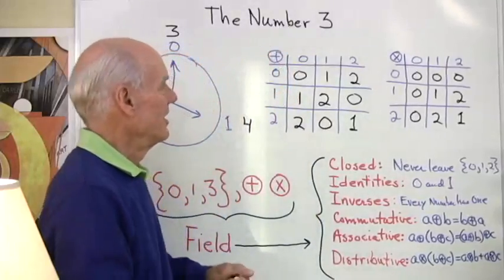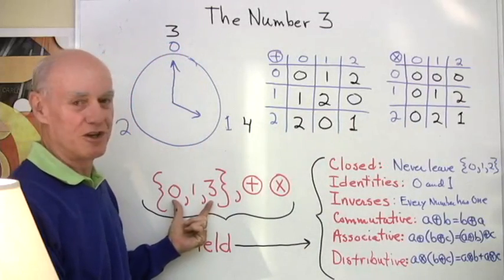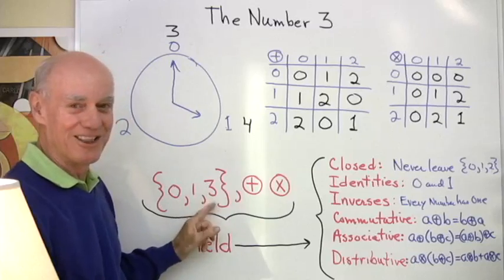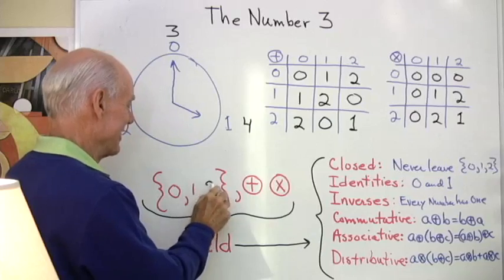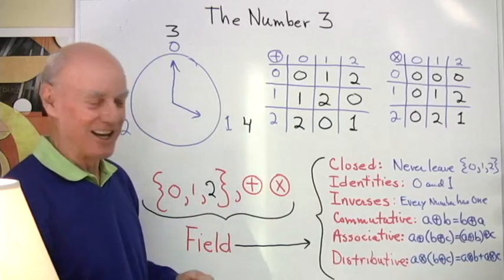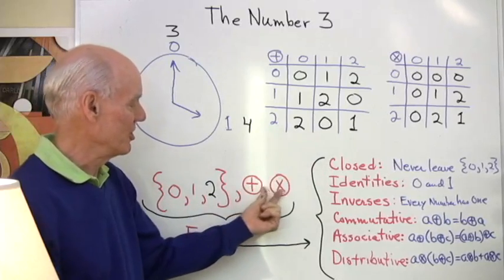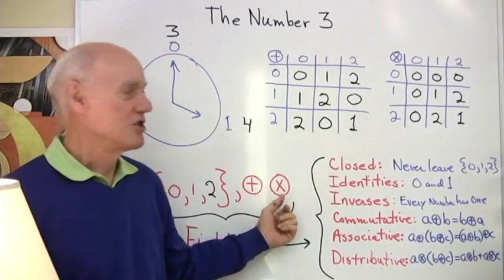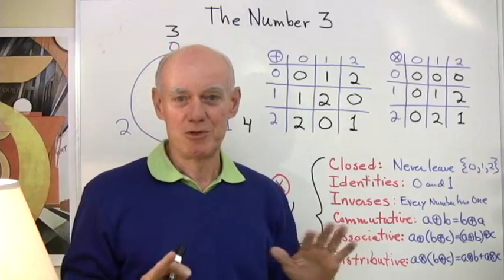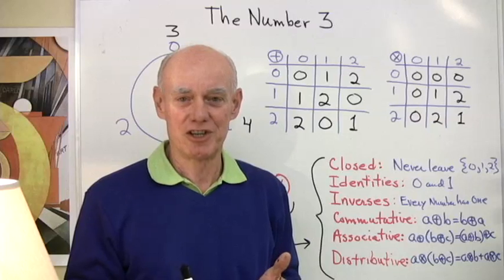So here's my circle addition, circle multiplication for this clock arithmetic with the numbers 0, 1, and 2. This is just kind of a follow-up using a set with three numbers and these new kinds of definitions for addition and multiplication.